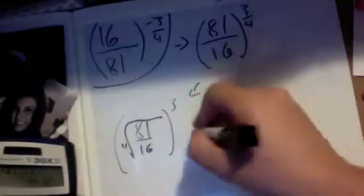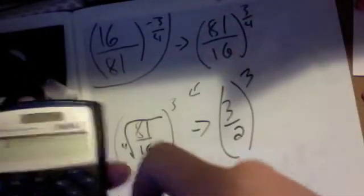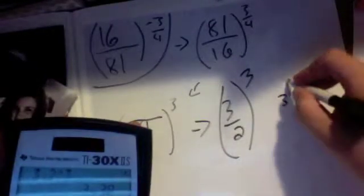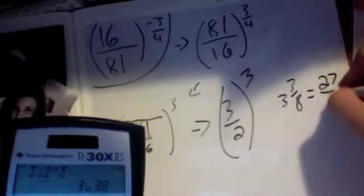Which equals three halves. So you do three halves cubed, and then three halves cubed over two cubed. Hold on, equals three and three eighths, which is equal to 27 over 8.